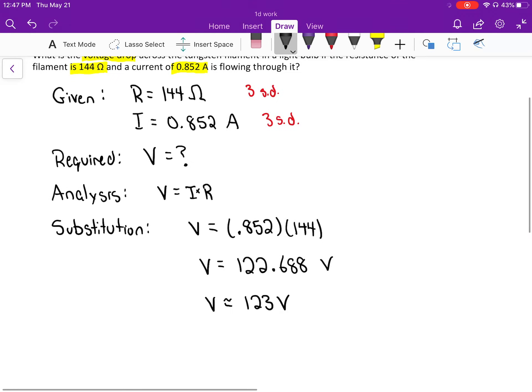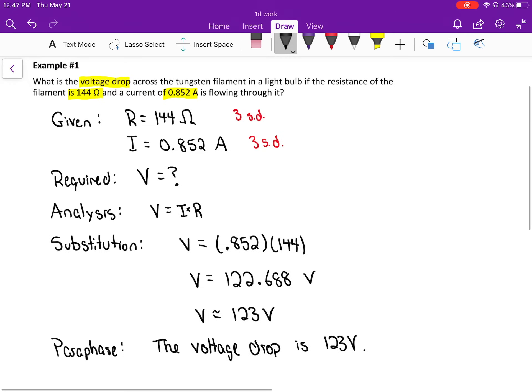In the GRASP method, the P stands for paraphrase. That just means write a sentence to actually answer the question. The voltage drop is 123 volts. That's how you do the Ohm's Law part, using that GRASP analysis part.